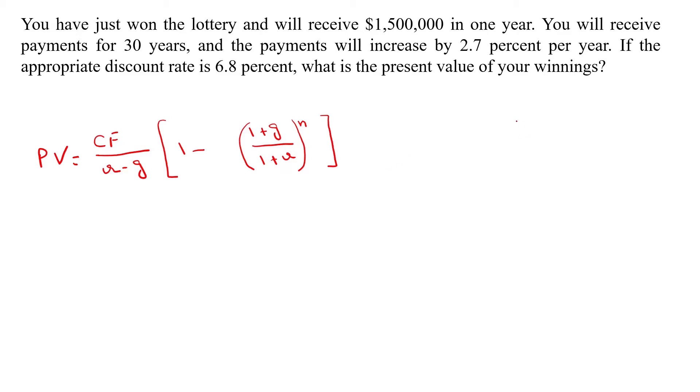Here in this question, cash flow is $1.5 million, R is 6.8%, G is 2.7%, and N is 30 years.